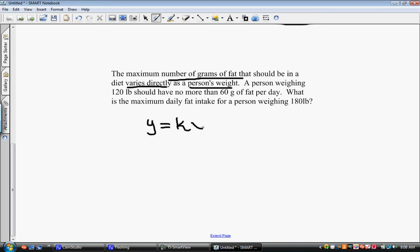And since we talk about the maximum number of grams of fat, I'm actually going to use F for fat. That's the thing that's varying directly. So that's what goes in place of y. Whatever says varies directly, that's the first thing that goes into the equation. And it says it varies directly with the person's weight. Now k in these problems will always be a k.